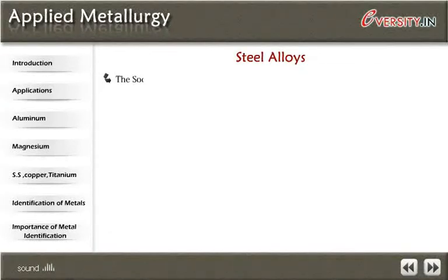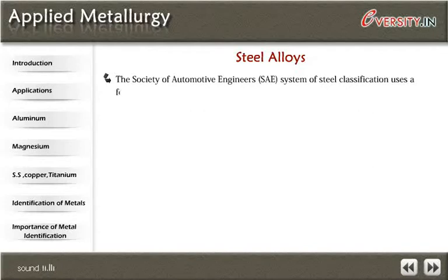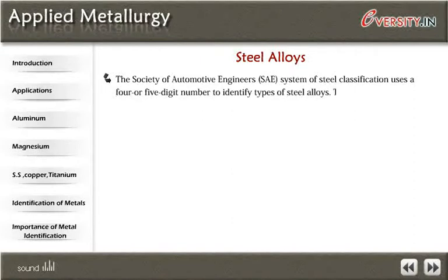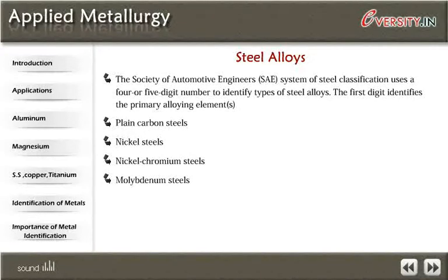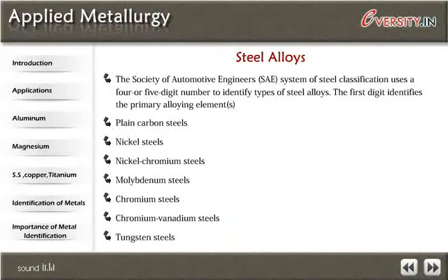Steel Alloys: The Society of Automotive Engineers system of steel classification uses a 4 or 5 digit number to identify types of steel alloys. The first digit identifies the primary alloying elements: plain carbon steels, nickel steels, nickel-chromium steels, molybdenum steels, chromium steels, chromium-vanadium steels, and tungsten steels.